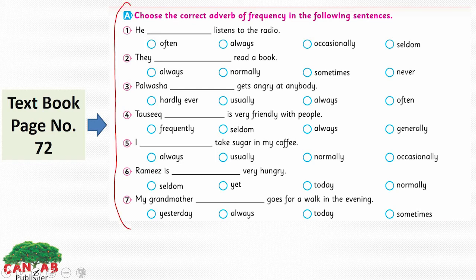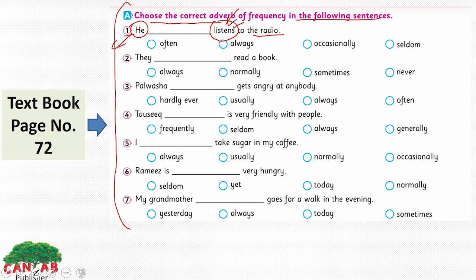Page 72 of your textbook — let's do the exercise. Choose the correct adverb of frequency in the following sentences. There are seven sentences with four options each. The first one: 'He listens to the radio ___.' He/she/it کے ساتھ present simple tense میں verb کی first form میں S کا addition کرتے ہیں — 'listens'۔ Options are: often, always, occasionally, or seldom. 'Always' or 'occasionally' نہیں آئے گا — occasionally کوئی خاص occasion نہیں ہے رادیو سننے کا۔ So 'often' or 'seldom' suitable ہے۔